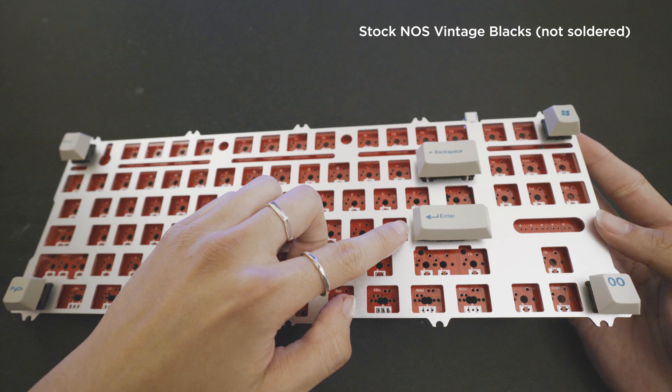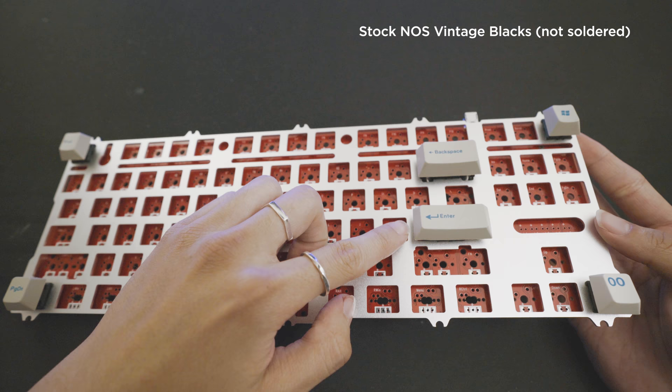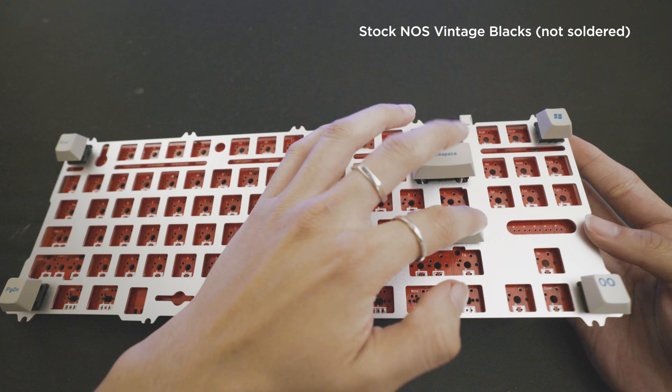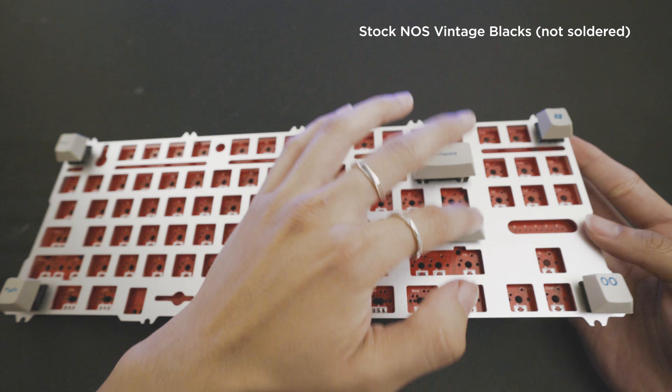Here we have an un-lubed and un-clipped stabilizer. Here we have the stabilizer that we just lubed and clipped. There's a big difference.